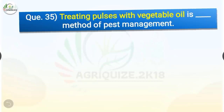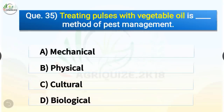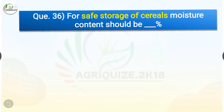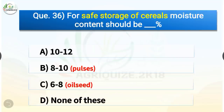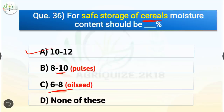Question number 35. Treating pulses with vegetable oil is which method of pest management? The options are mechanical, physical, cultural, or biological. The correct answer is option B, physical. Treating pulses with vegetable oil is a physical method of pest management. Question number 36. For safe storage of cereals, moisture content should be 10 to 12 percentage. For safe storage of pulses, moisture content should be 8 to 10 percentage, and for oil seeds, it should be around 6 to 8 percentage.